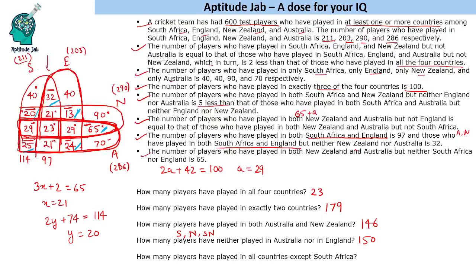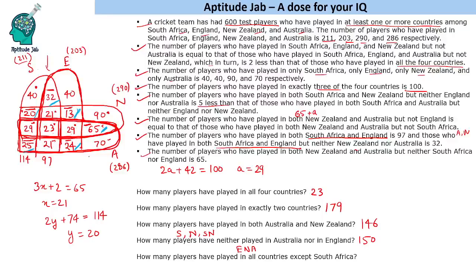How many players have played in all countries except South Africa? Except South Africa means they must have played in England, New Zealand and Australia. Looking at the diagram, there are 29 players who have played in England, New Zealand and Australia but not South Africa. So this was the solution to the set and the answers to all the questions.